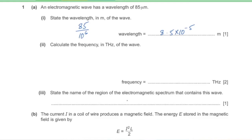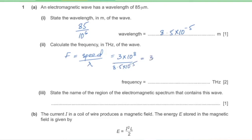Calculate the frequency in terahertz of the wave. Frequency is equal to speed divided by wavelength. The speed of any electromagnetic wave is 3 × 10⁸ meters per second, divided by 8.5 × 10⁻⁵, giving a frequency of 3.53 × 10¹² hertz. Converting to terahertz by dividing by 10¹², we get 3.53 terahertz.